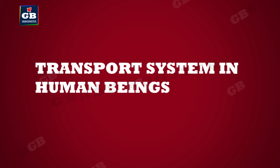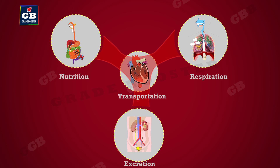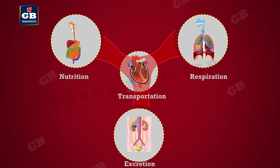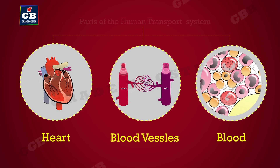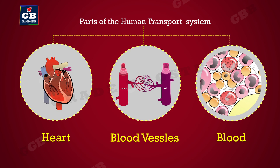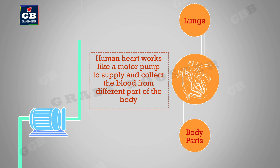Transport system in human beings: transportation is the life process that helps in the transport of materials in nutrition, respiration, and excretion. Heart, blood vessels, and blood are the parts of our transport system. Just as an electric pump pushes water through pipes, the heart pumps blood through blood vessels to different parts of our body.